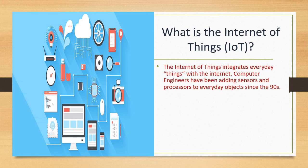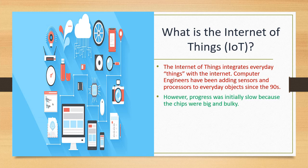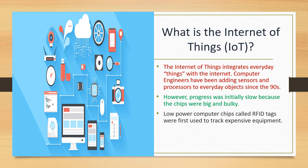The Internet of Things integrates everyday things with the internet. 'Things' here means all devices which can be used for various types of communications. Computer engineers have been adding sensors and processors to everyday objects since the 90s, but progress was initially slow because the chips were big and bulky. For example, to make a microwave a smart device, the chips need to be small enough that the device's core functionality is not impacted.